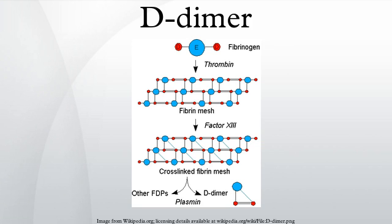Principles. Coagulation, the formation of a blood clot or thrombus, occurs when the proteins of the coagulation cascade are activated either by contact with damaged blood vessel wall or by activation of factor VII by tissue activating factors. Both pathways lead to the generation of thrombin, an enzyme that turns the soluble blood protein fibrinogen into fibrin, which aggregates into protofibrils.